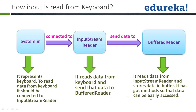The InputStreamReader reads data from the keyboard and sends that data to the BufferedReader. The BufferedReader reads data from the InputStreamReader and stores data in a buffer. It has methods so that the data can be easily accessed. These are linked like this: System.in → InputStreamReader → BufferedReader. When you create a BufferedReader object, within it you pass the InputStreamReader, and within that you pass System.in.